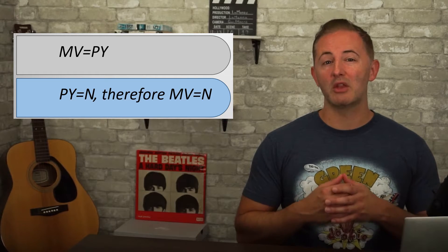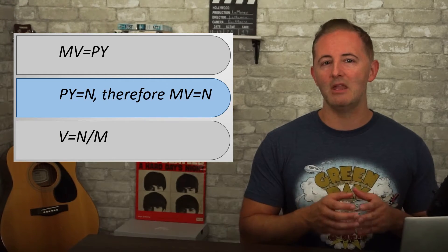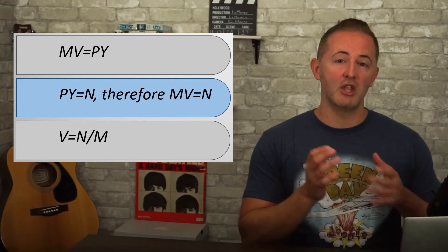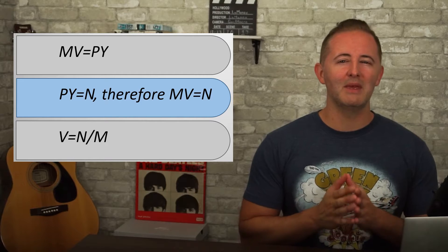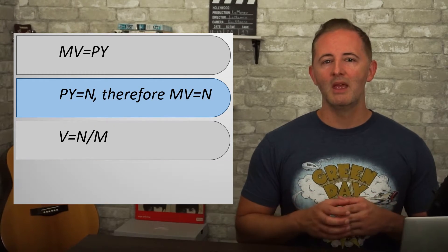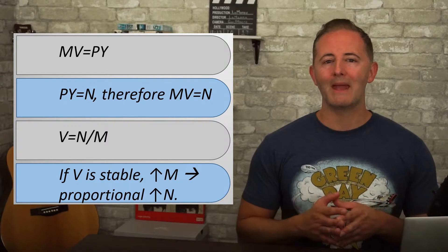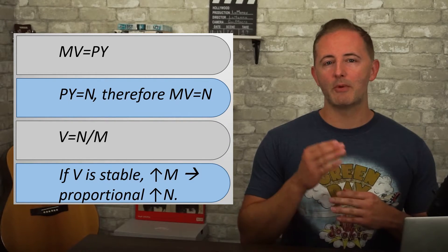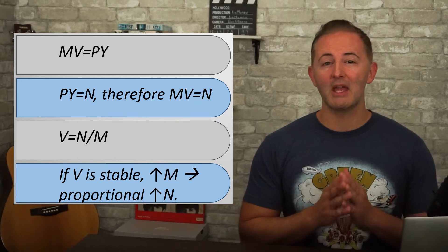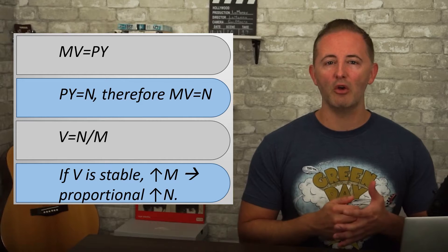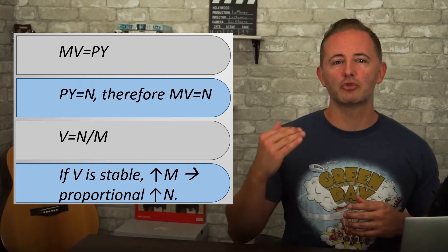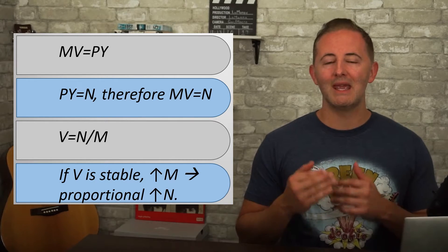We can also rewrite our equation to say that V equals N divided by M, which shows that the velocity of money is the ratio of nominal GDP to the money supply. Now, the claim is that the growth of the money supply determines the growth of the price level. If we assume that the velocity of money is stable, then an increase in M leads to a proportional increase in nominal GDP. And since changes in the money supply don't affect real GDP in the long run, an increase in the money supply leads directly to a proportional increase in the price level.